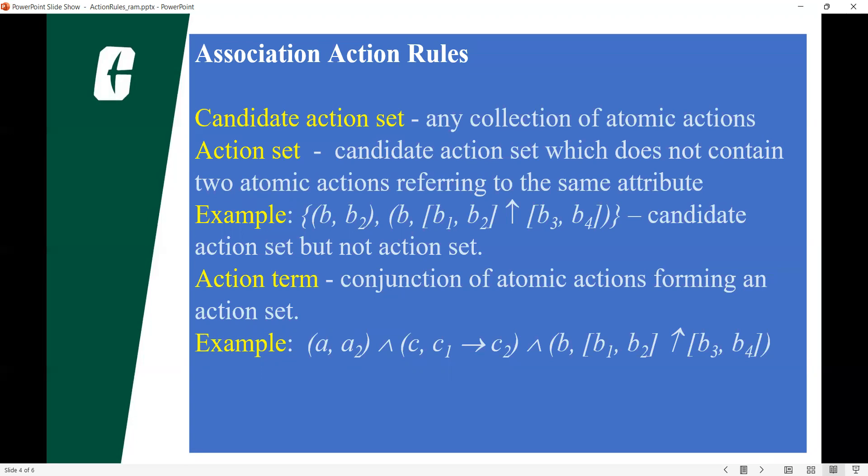As we have seen in the previous example, same like candidate action set but not action set from B dataset. And when it comes to action set, it is a conjunction of atomic actions to form an action set.